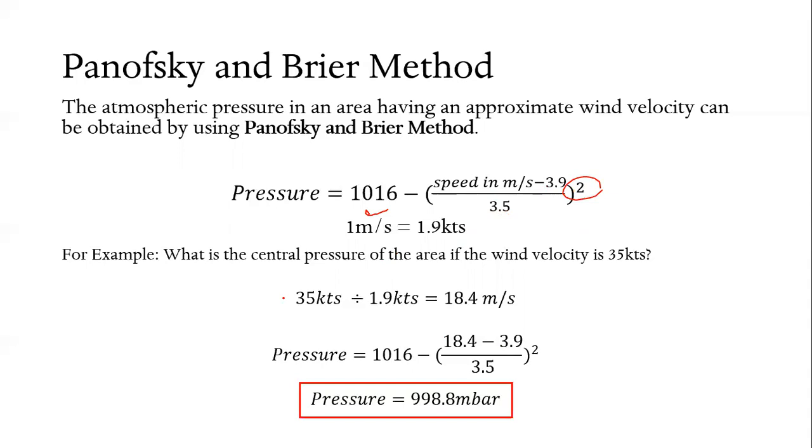Let's enter the given. What is the central pressure of the area if the wind velocity is 35 knots?